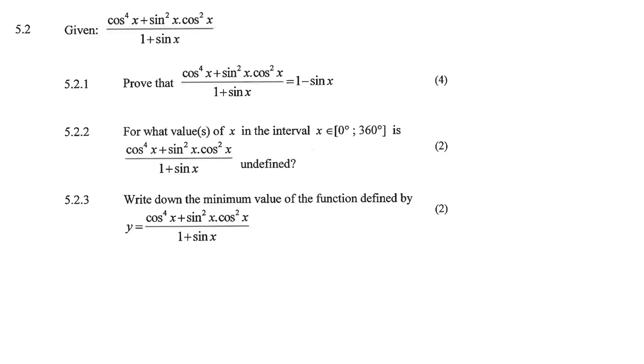Given cos to the power of 4x plus sin squared x times cos squared x over 1 plus sin x, prove that it equals 1 minus sin x. So here is our identity that we need to prove. I'm definitely going to work on the left-hand side. We've got cos to the 4 plus sin squared x times cos squared x over 1 plus sin x.